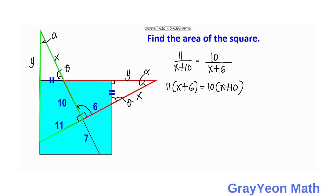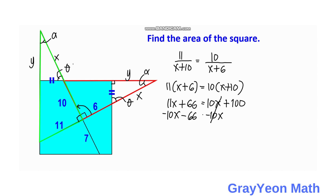So we have 11x + 66 = 10x + 100. If we subtract 10x from both sides, x is equal to 34.